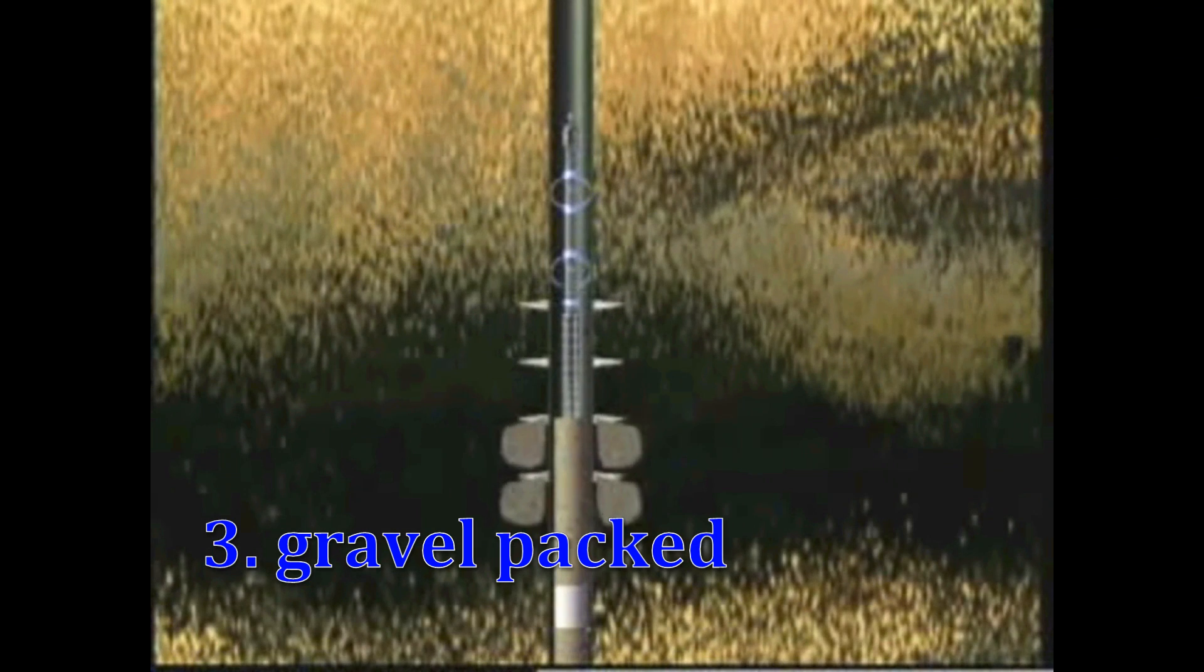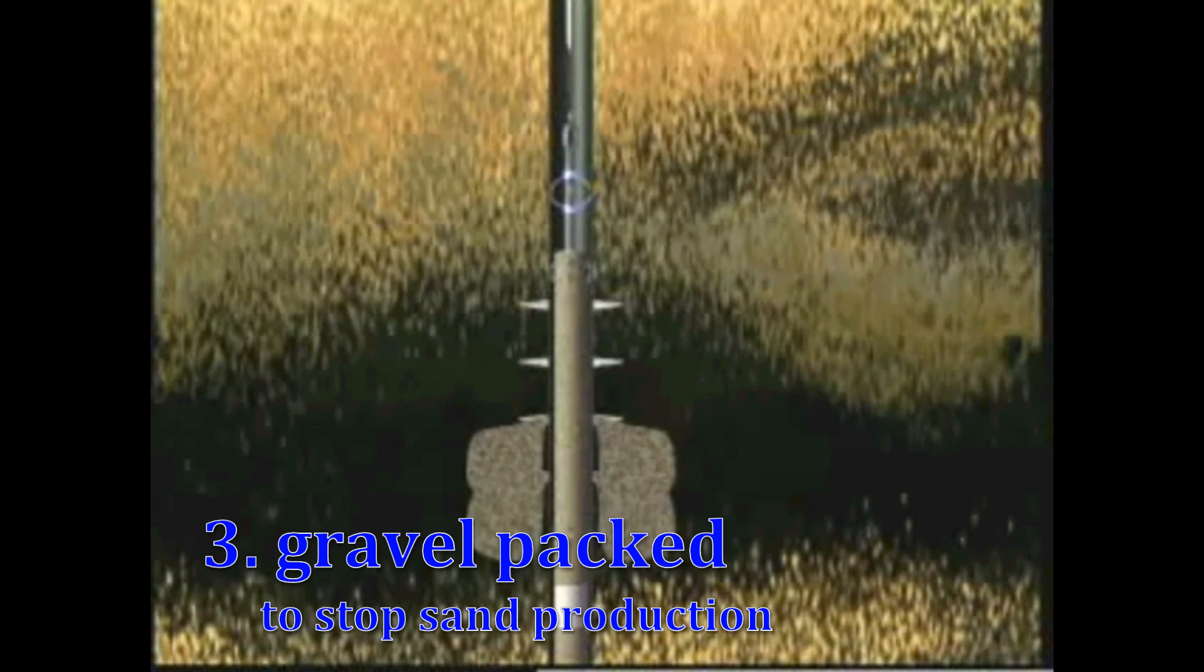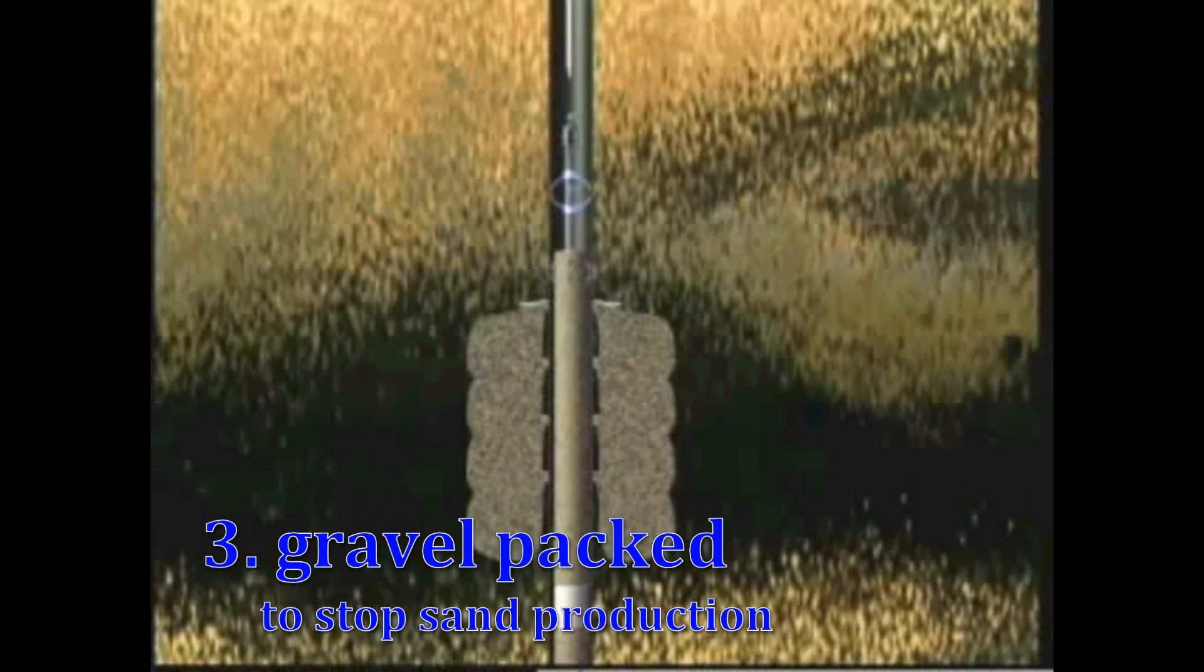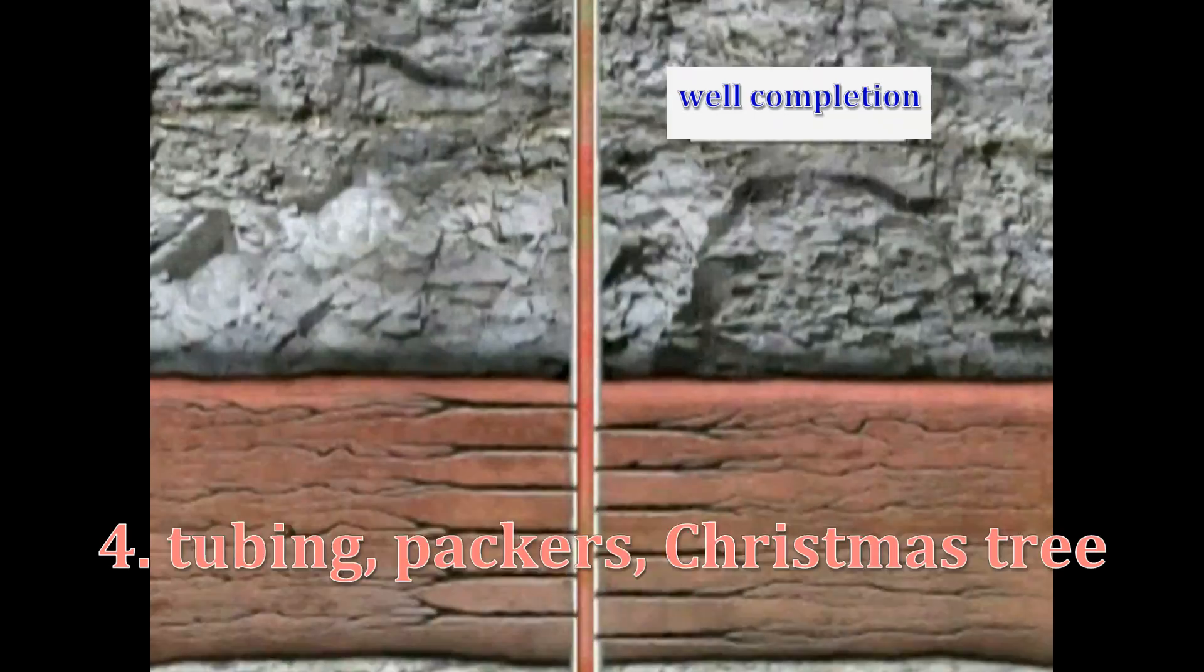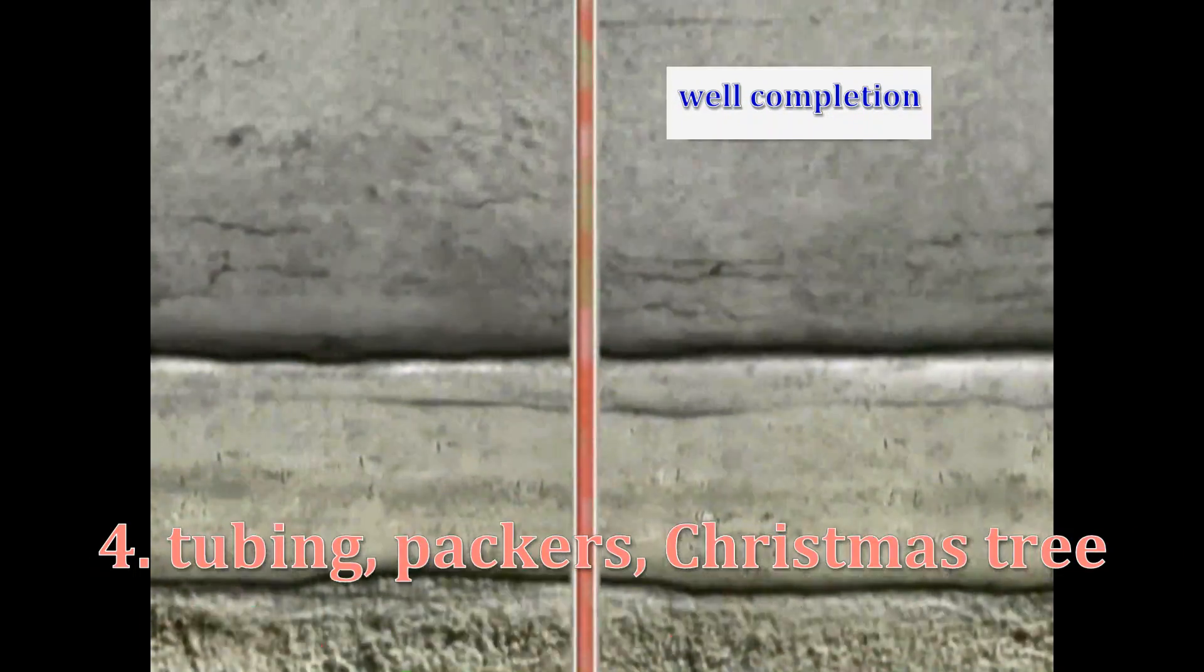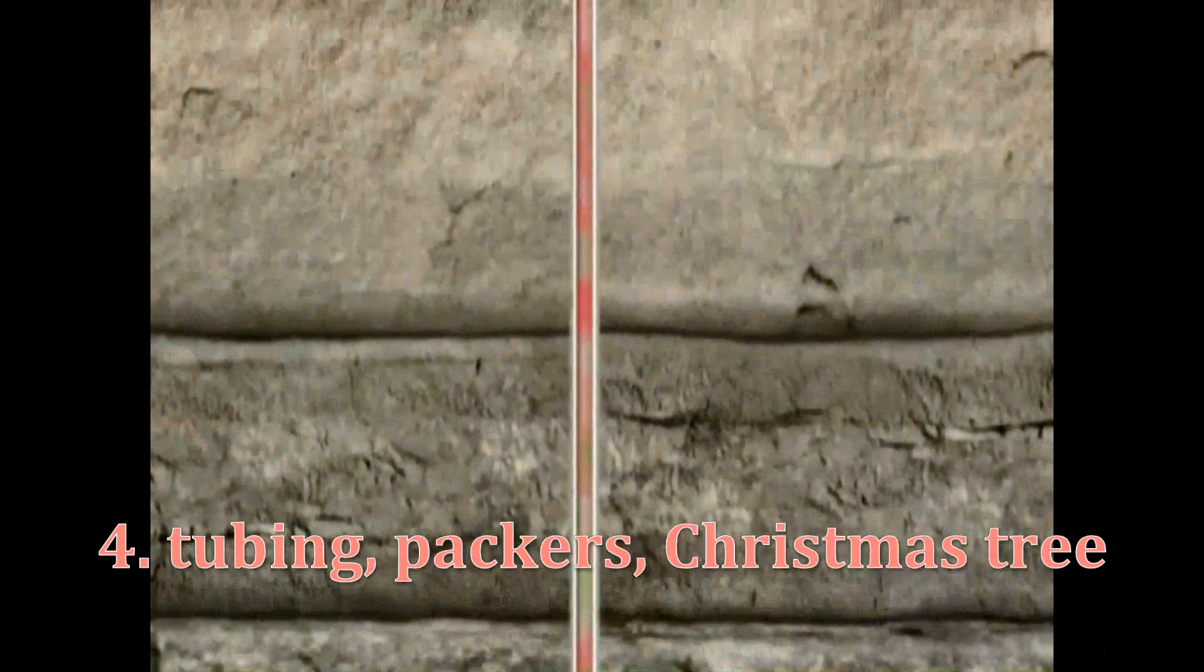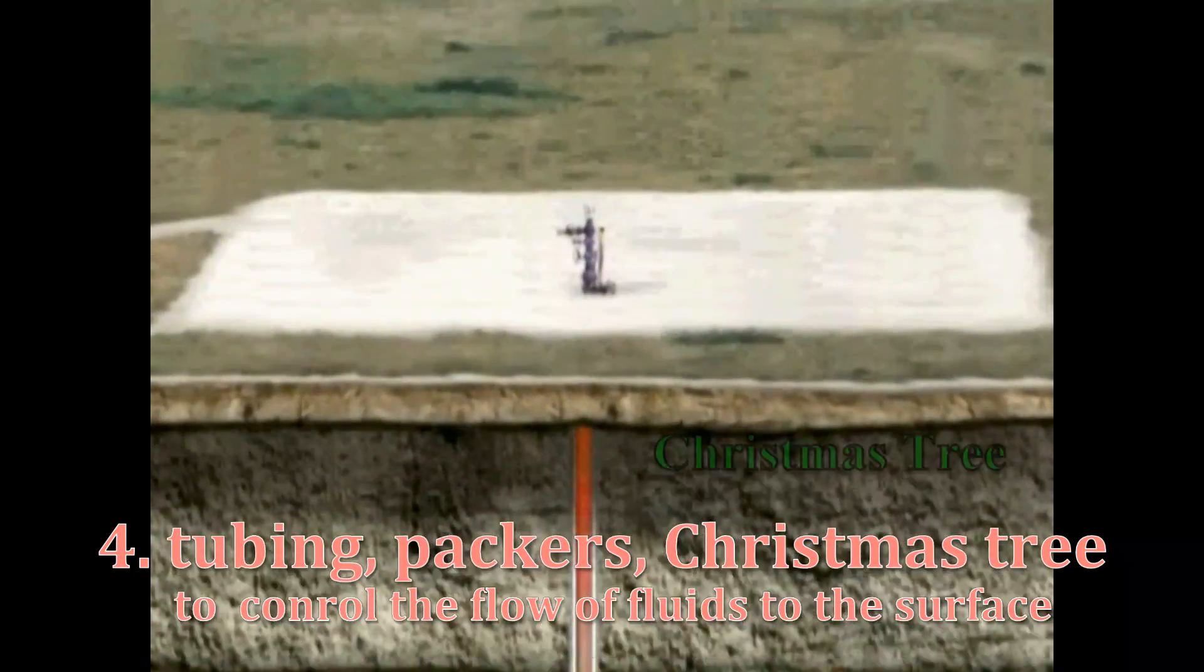Third, if needed, the zone can also be gravel packed to stop sand production. Fourth, finally, the well is equipped with tubing, packers, and a Christmas tree to control the flow of fluids to the surface.